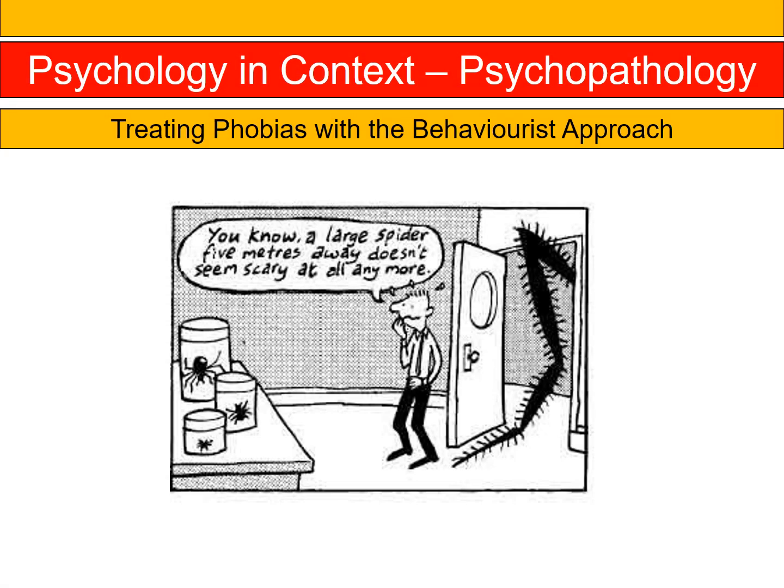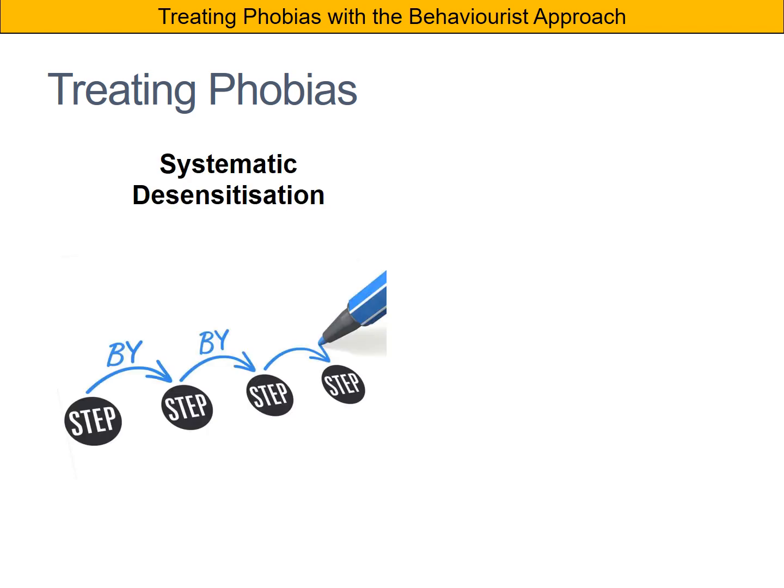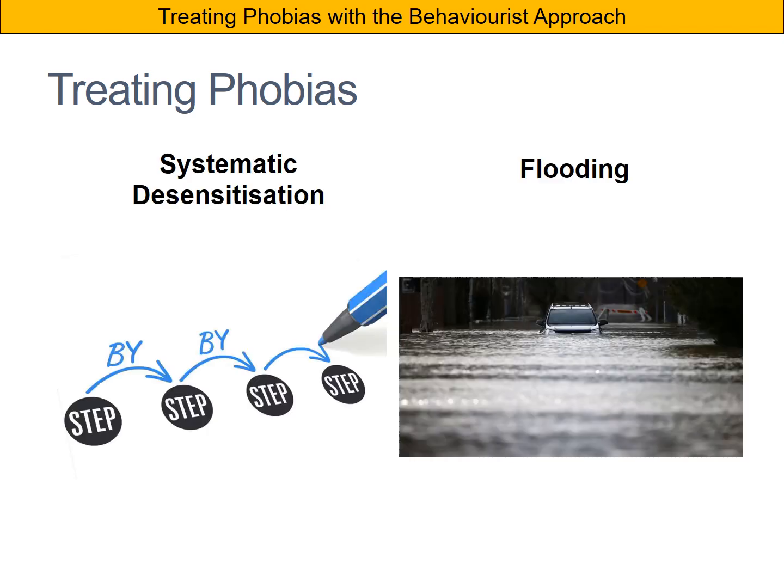In the last screencast we looked at how we could use behaviourist principles to explain the development and maintenance of phobias. In this screencast we're going to use the same principles — operant and classical conditioning — but this time we're going to look at how we can use them to treat phobias. There are two treatments which stem from behaviourist principles: the first is systematic desensitisation and the second is flooding.